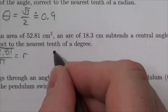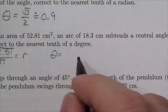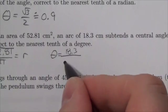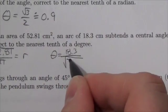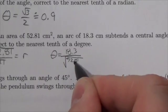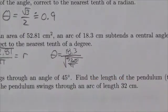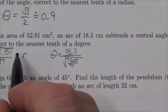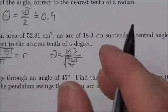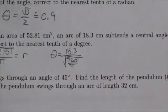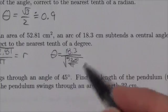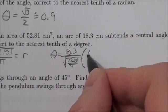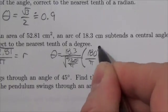So theta is going to equal — the formula is 18.3 over my radius, which is the square root of 52.81 over π. The question says they want an answer to the nearest tenth of a degree, so I'm going to have to convert this to degrees. I'm going to incorporate the conversion factor and multiply by 180 degrees over π.